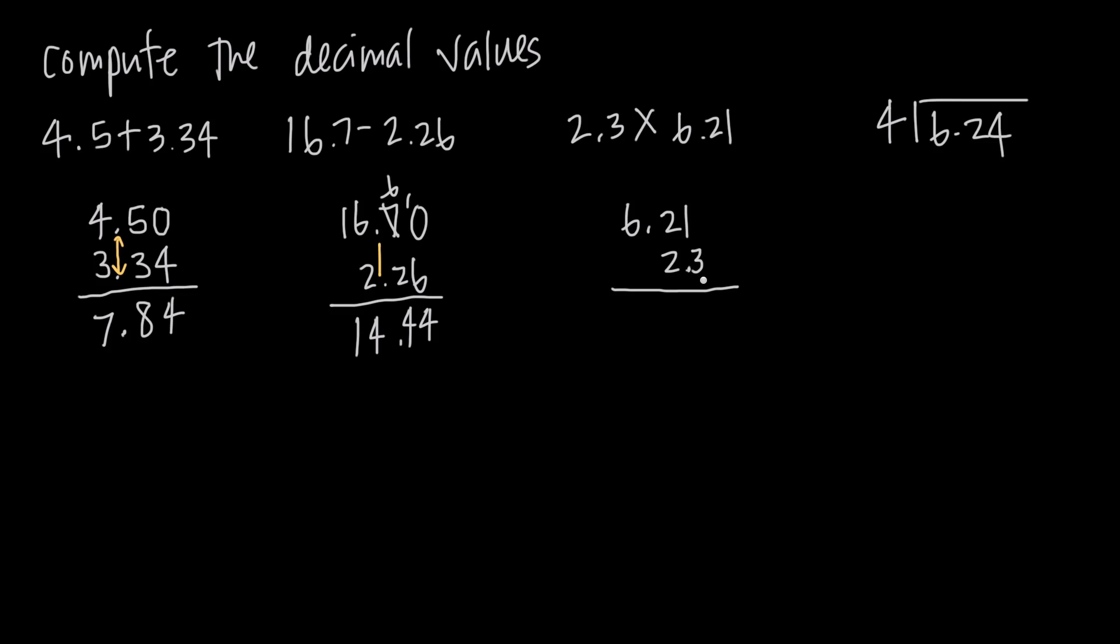So we're going to take this value here, 3, and multiply by each of the numbers in this 6, 2, 1 here. So we're going to say 3 times 1 gives us 3. 3 times 2 gives us 6. And 3 times 6 gives us 18. Remember now we put a 0 here. And then we multiply 2 by 1, then by 2, then by 6. So 2 times 1 gives us 2. 2 times 2 gives us 4. And 2 times 6 gives us 12. Now we want to add these together.